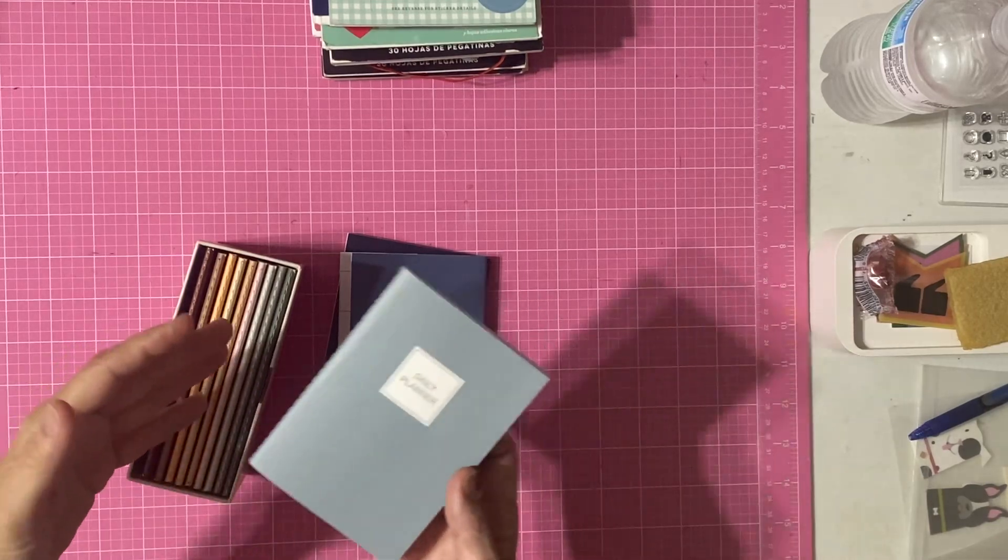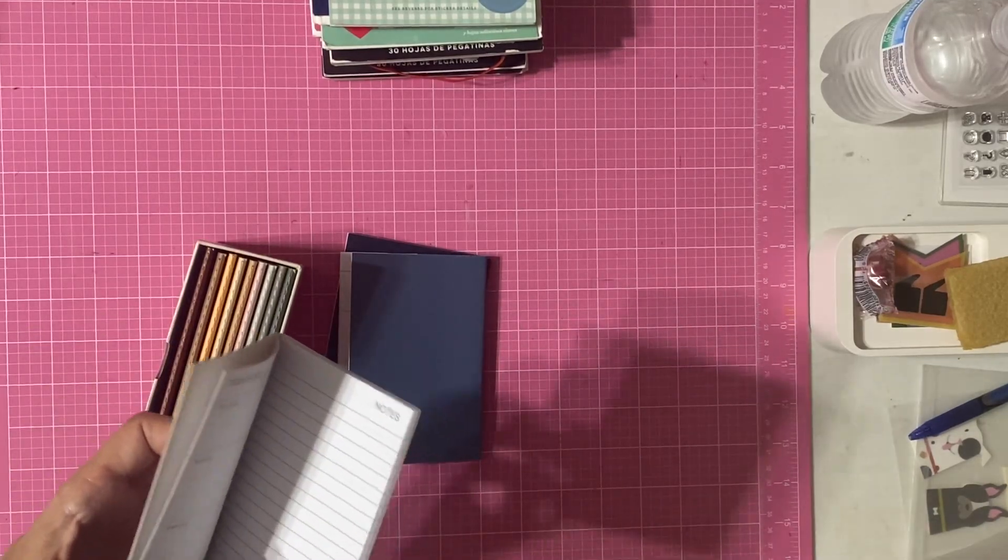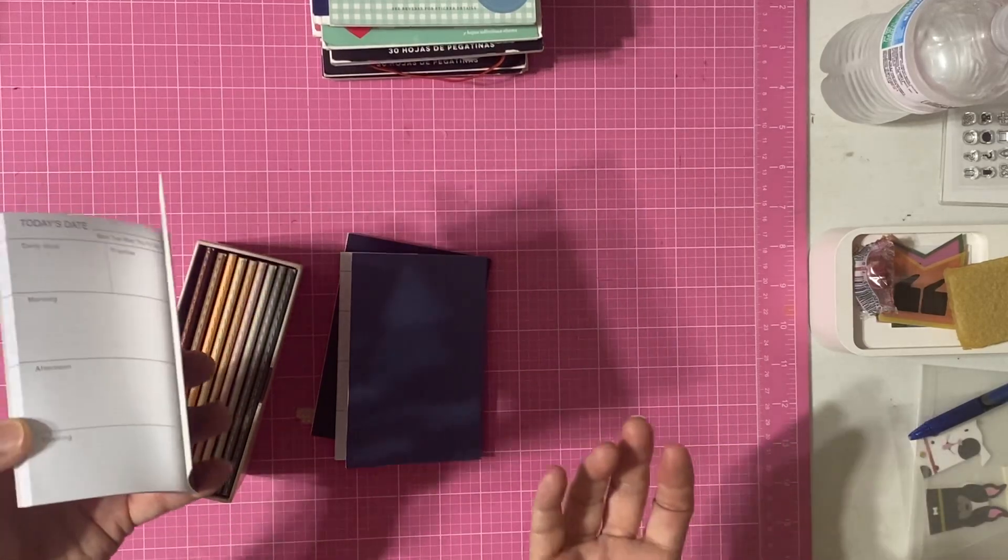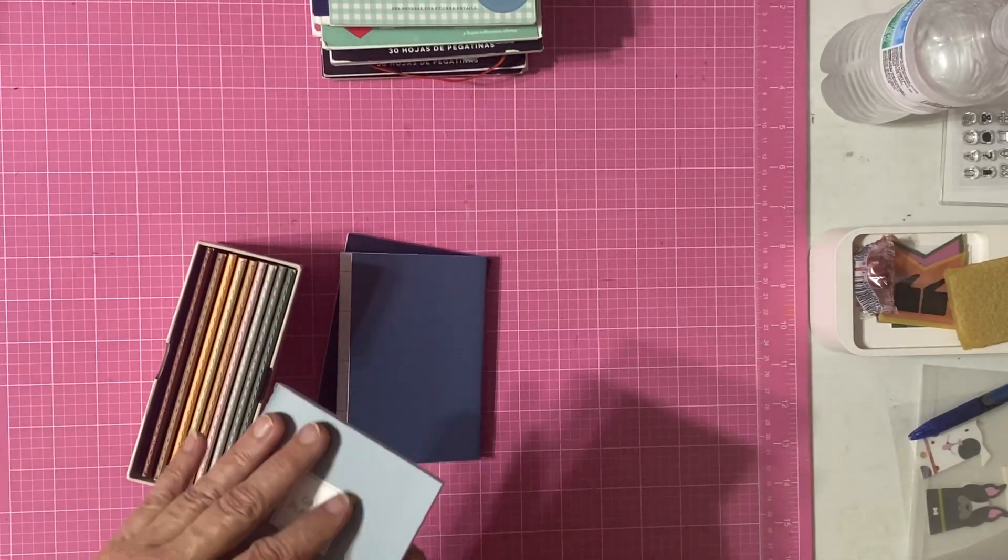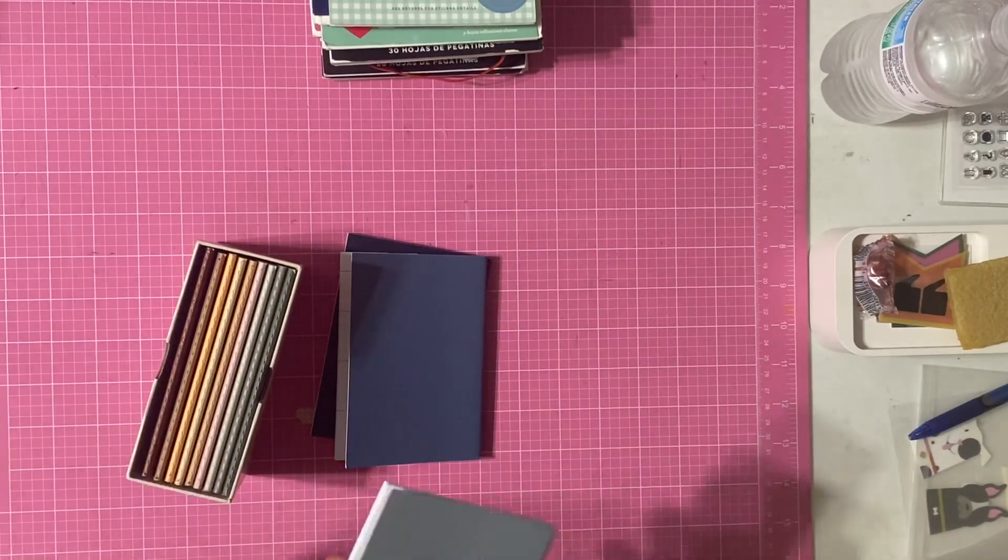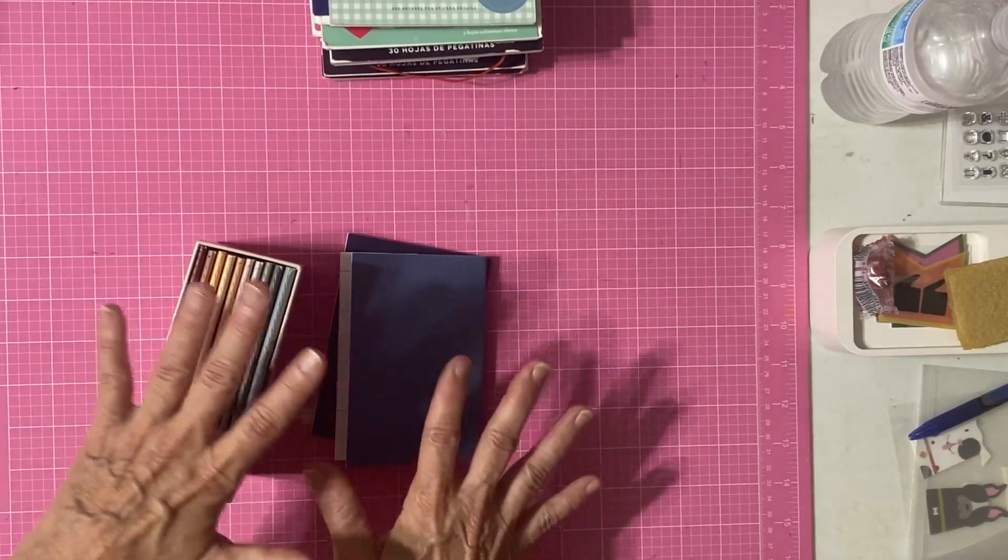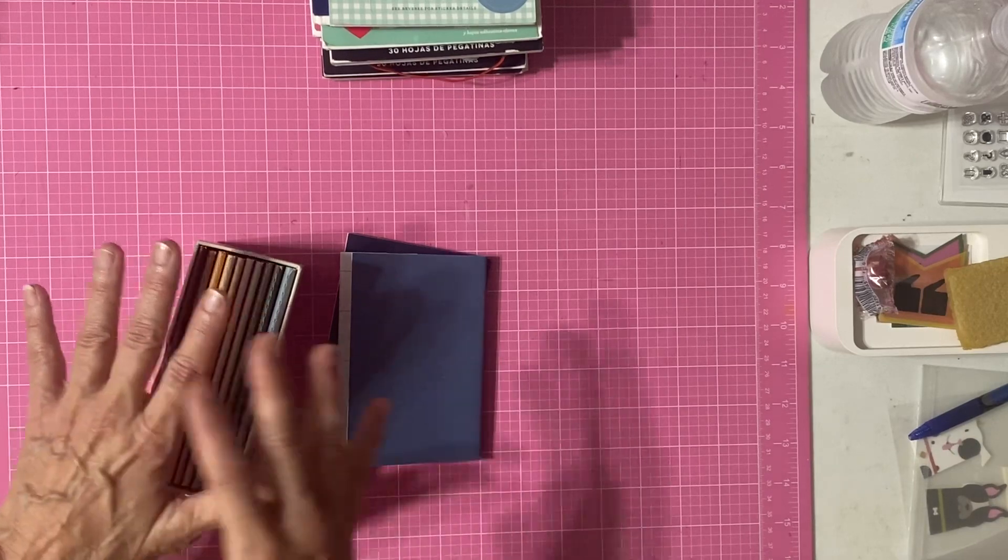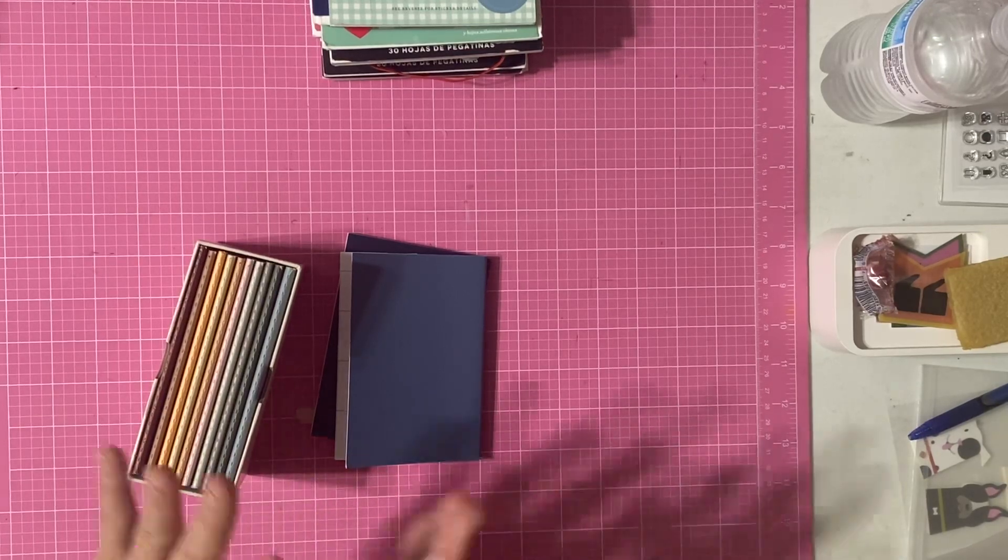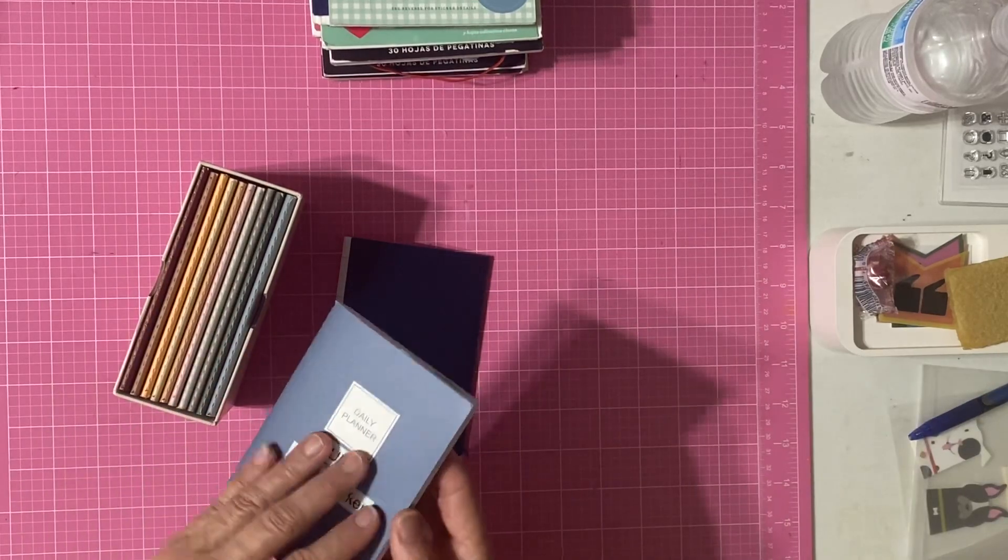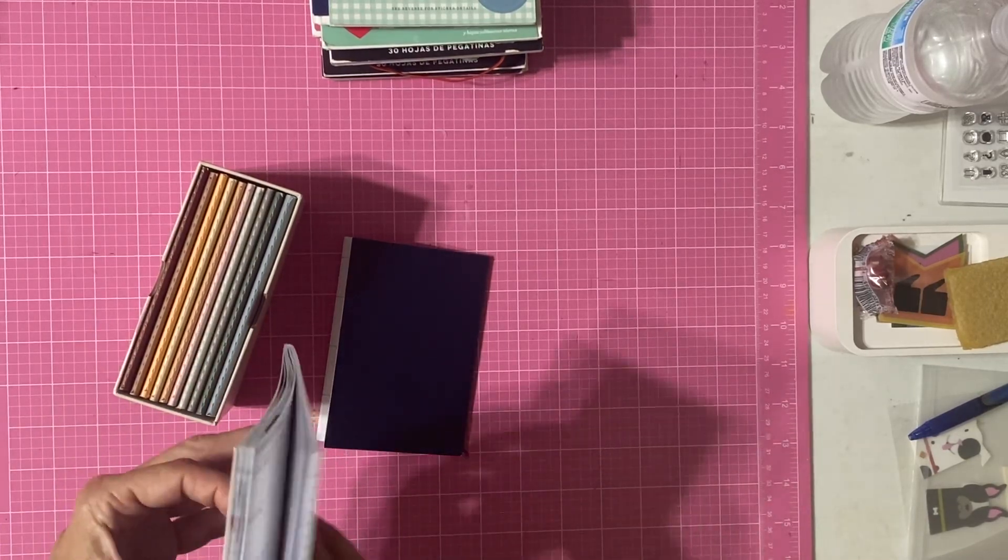Without investing in a big planner like the Hobonichi Cousin that a lot of people love using that I've seen all over YouTube. This way I can see if this is something I really want to do. Of course this is going to take me a little time first to get used to it, figure out what I want to be putting in it. Things like that which can change over time and it does for a lot of people.